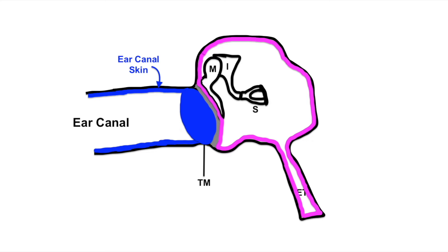What we will be doing in this procedure is removing the ear canal skin from the middle fibrous layer along with a cuff of ear canal skin, placing a graft over the middle fibrous layer, and using a skin graft from the postauricular area to help line the medial canal.